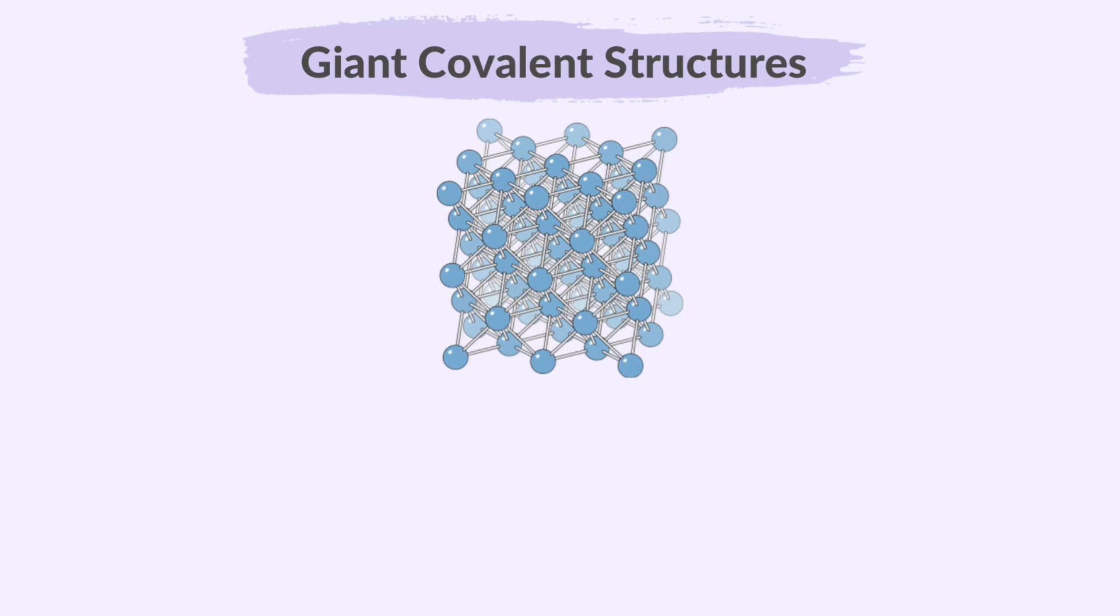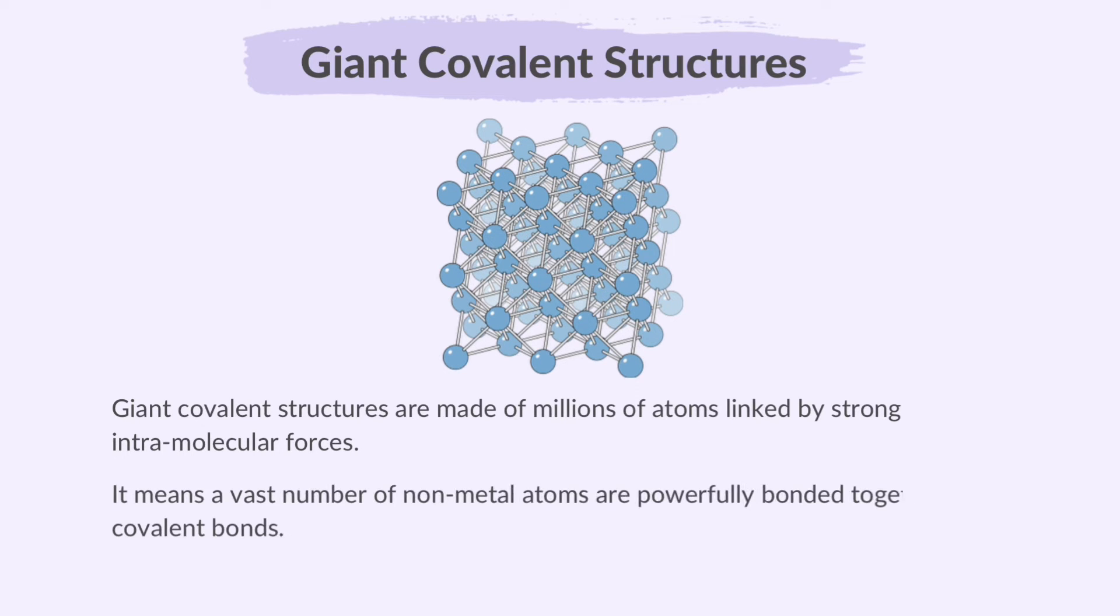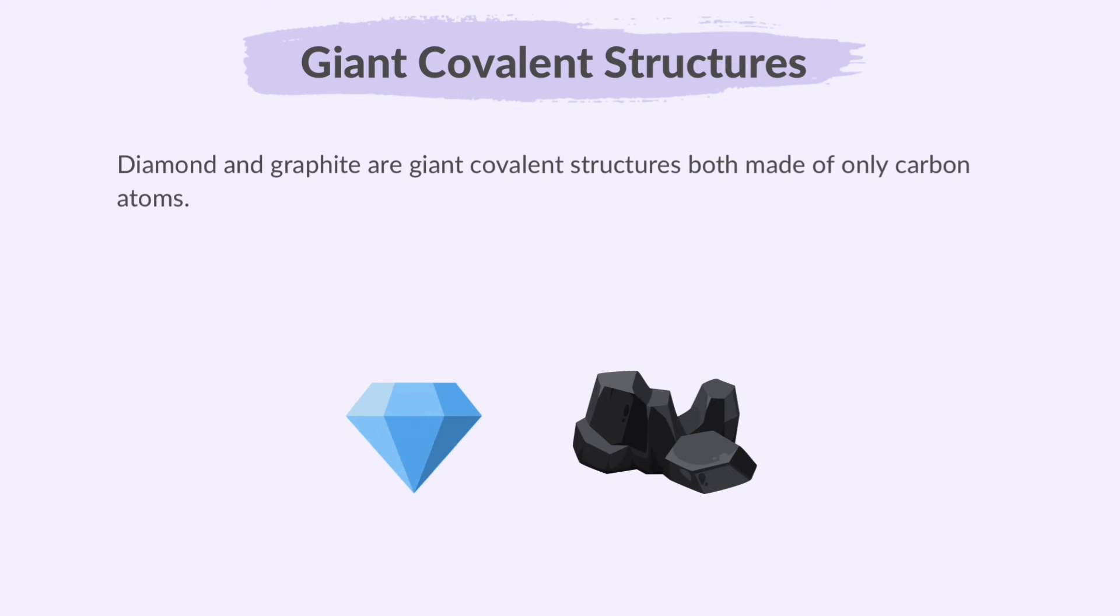Now let's learn about giant covalent structures. All the covalent molecules we discussed earlier are simple molecules because they involve a small number of atoms bonded to one another. They are attracted through weaker intermolecular forces. On the other hand, giant covalent structures are made of millions of atoms linked by strong intramolecular forces. It means a vast number of non-metal atoms are powerfully bonded together by covalent bonds. Diamond and graphite are giant covalent structures, both made of only carbon atoms. However, their different structures and bonding makes them have different physical properties.